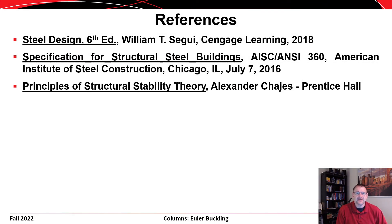That brings us to the end of this lecture. We looked at Euler elastic buckling for a pin-pin column, compared it to the elastic buckling strength of a fixed-fixed column, and used that to introduce the idea of an effective length factor k. We covered basic terminology of eigenvalue analysis, and concluded by examining different buckling modes for I-shaped members about both their major and minor axes. In future lectures, we'll look at how these theoretical failure modes are applied in the design provisions used for actual design of members and buildings.